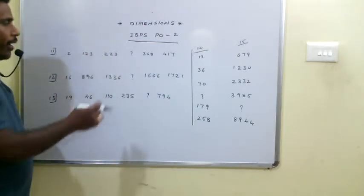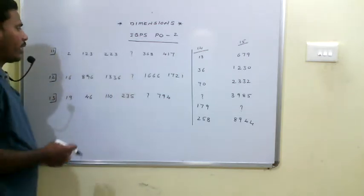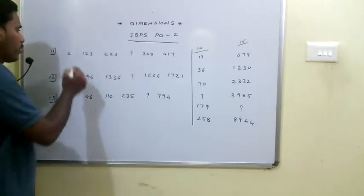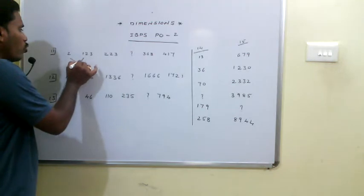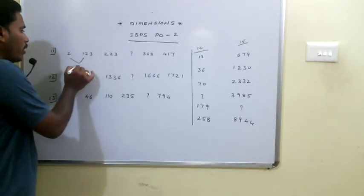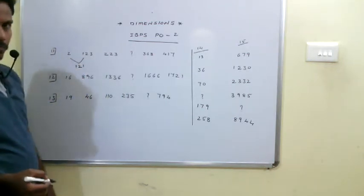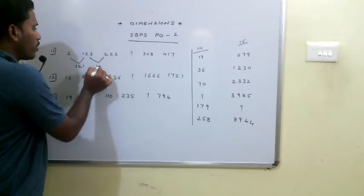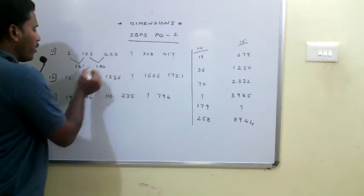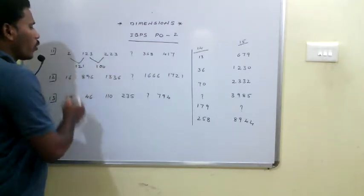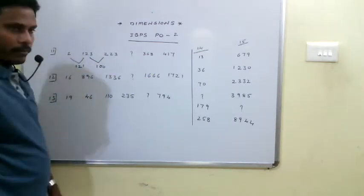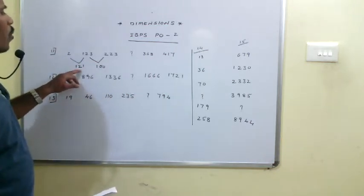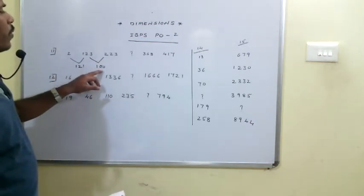To identify the differences, let us take the difference between the given terms. The difference between 2 and 123 is 124, and the difference between these two numbers is 100. This is 121, this is 100 — that is 10 squared. This is 11 squared, this is 10 squared.